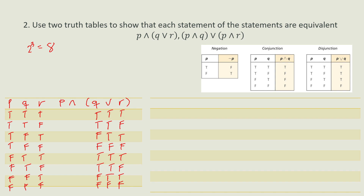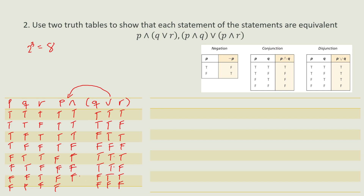Then we combine with P using conjunction. Copy P: true, true, true, true, false, false, false, false. The conjunction requires both statements to be true; otherwise it is false. So true and true is true, true and true is true, true and true is true, true and false is false, false and true is false, false and true is false, false and true is false, false and false is false. The last column is: true, true, true, false, false, false, false, false.